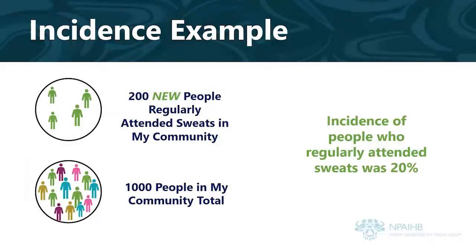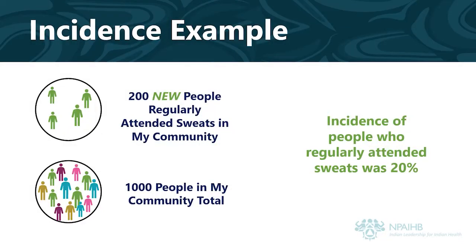For example, in my community, 200 new people regularly attended ceremonial sweats in 2018. My community had 1,000 members in 2018. That means that the incidence of people from my community who regularly attended ceremonial sweats in 2018 was 20%.